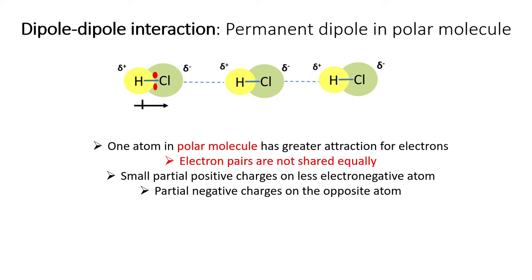The difference in electronegativity between these two atoms is known as dipole moment, and in this HCl molecule the dipole moment is 1 Debye. Other neighbouring HCl molecules also have such permanent dipoles, and the attractive forces between them is called dipole-dipole interaction.